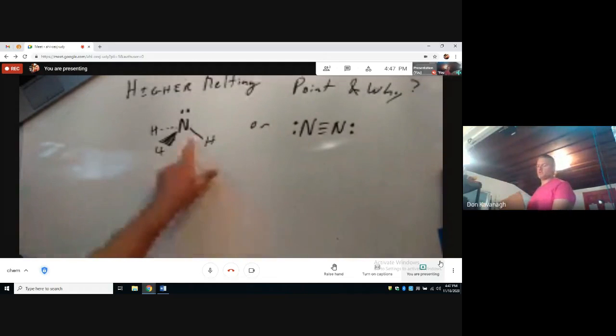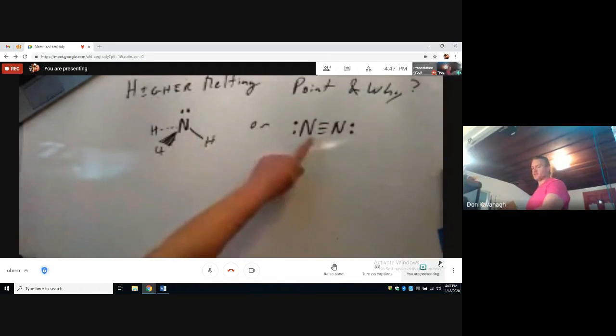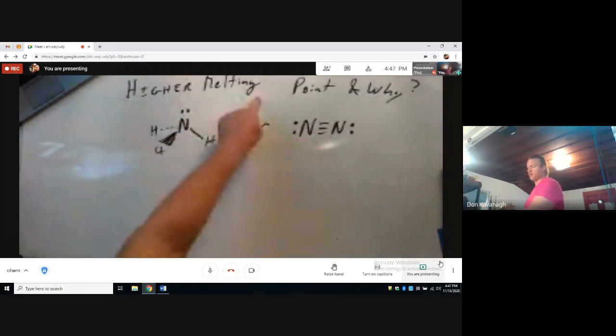Which of these two molecules, ammonia or dinitrogen gas, has a higher melting point and why?